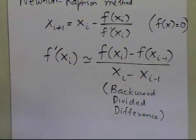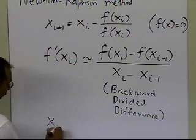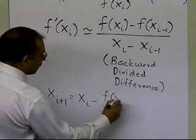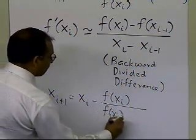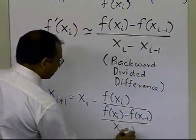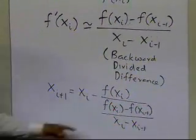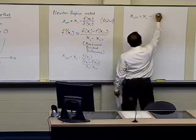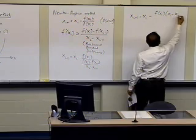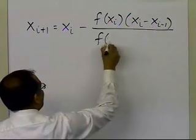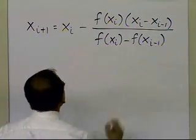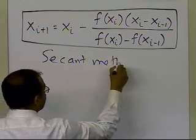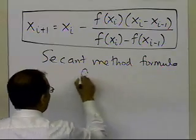If I substitute this approximation back into the Newton-Raphson formula, I get x_{i+1} = x_i minus f(x_i) times (x_i − x_{i-1}), divided by (f(x_i) − f(x_{i-1})). Simplifying by taking the divided difference to the numerator gives the secant method formula for f(x) = 0.